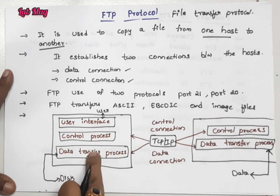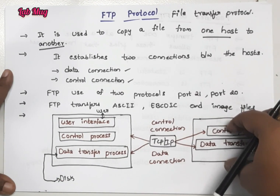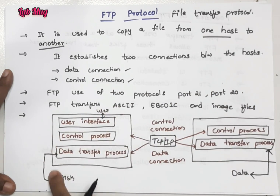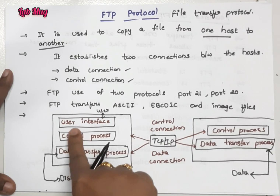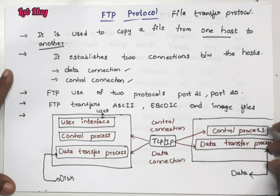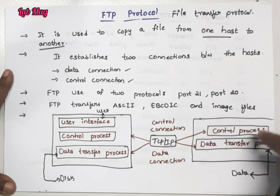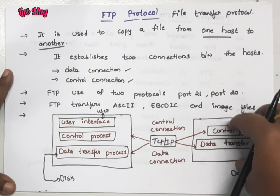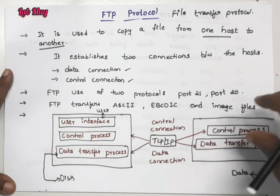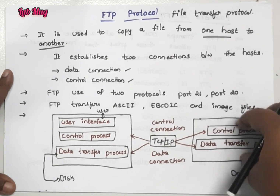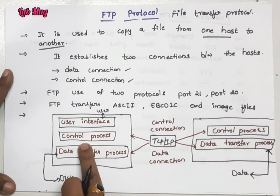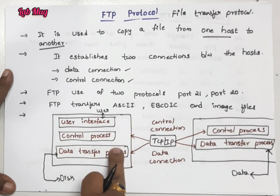On the total user side, we have three things, and on the server side we have two things. From the user side, with these two connections, we divide into three parts: user interface, control process, and data transfer process. On the right side (server side), there are again control process and data transfer process. Between user interface and server, in the middle there is a data connection and control connection.